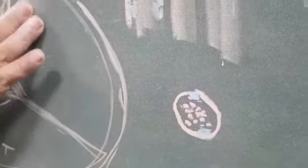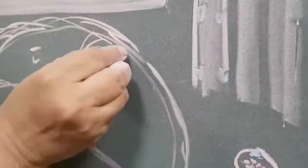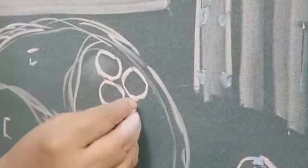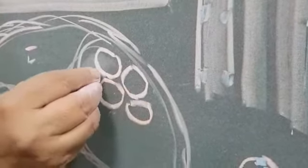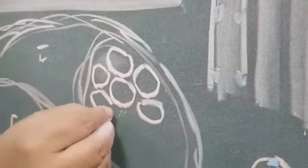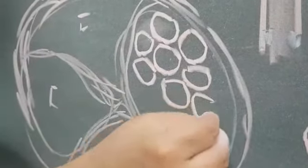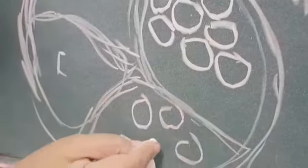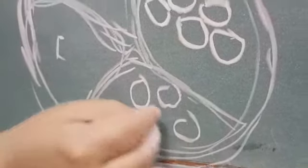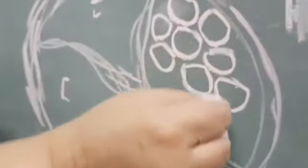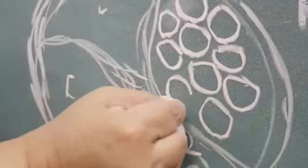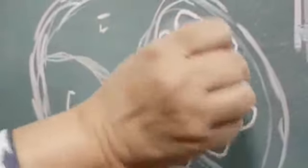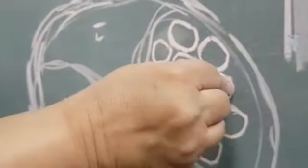But draw these transverse sections close to each other. Leave very small space between these for the endomysium. But do not draw them at such a far distance from each other. Do not leave too much space here. Just draw them close to each other.